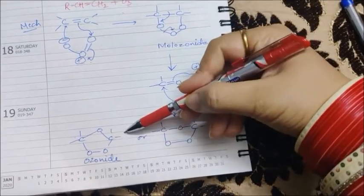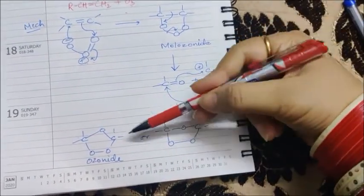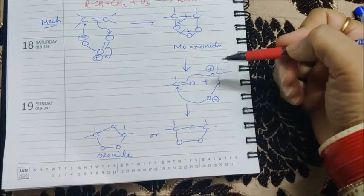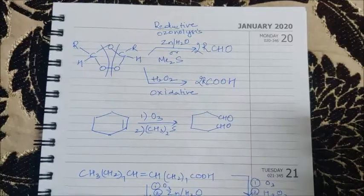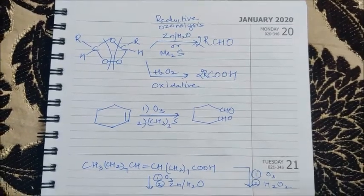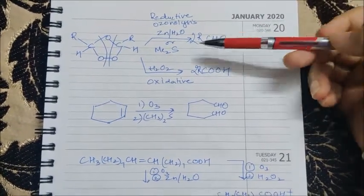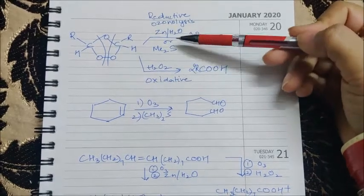From molozonide to ozonide, this is a single concerted step, but to make you memorize everything I have made these things in two steps. Now, as I was discussing earlier, there are two types of ozonolysis.